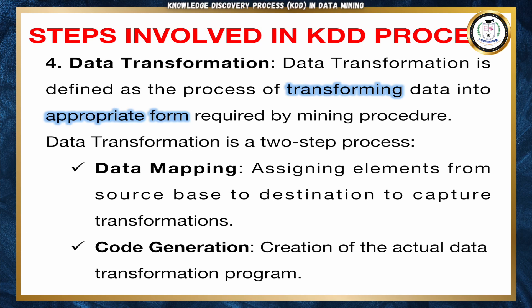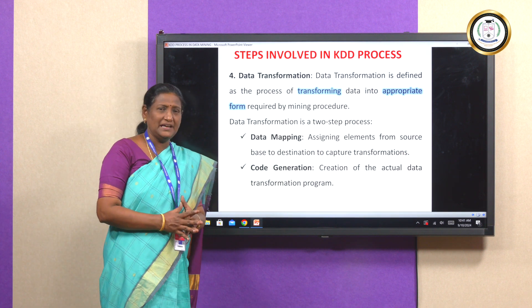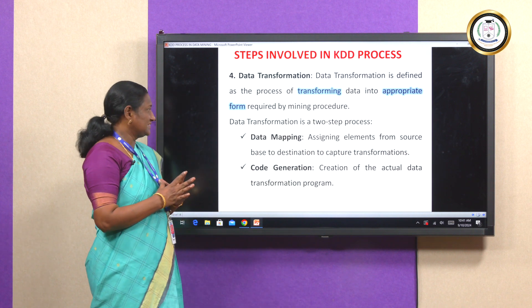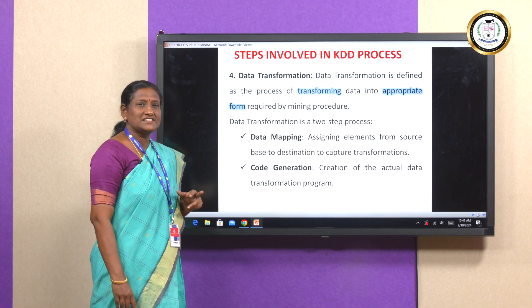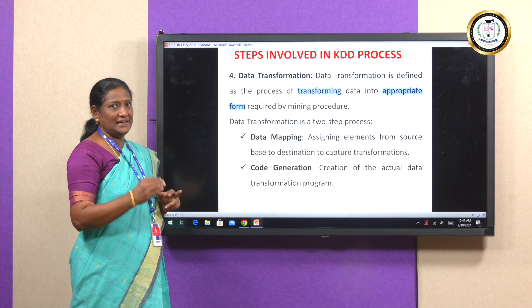The fourth step in the KDD process is data transformation. The data must be transformed into an appropriate form so it can be applied to data mining techniques. There are two sub-steps: the first is data mapping, where data is converted from source form to destination form; the second is code generation, where the actual code that transforms source data to destination data is created and implemented. At the end of step four, data is in a form suitable for data mining.